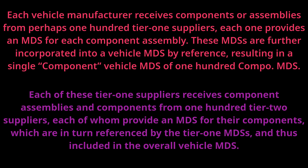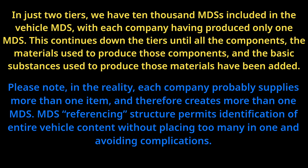Each OEM receives components or assemblies from, say, 100 Tier 1 suppliers with an MDS for each component, referenced into a single vehicle MDS containing about 100 component MDS. Each Tier 1 supplier receives assemblies and components from Tier 2 suppliers, each with their own MDS, in turn referenced by Tier 1 in their MDS. In just two tiers, about 10,000 MDS are included in the vehicle MDS, with each company providing only one MDS. This continues down to the last basic substance. In reality, each company likely supplies more than one item and will create more than one MDS. The MDS referencing structure permits identification of entire vehicle content without complication.